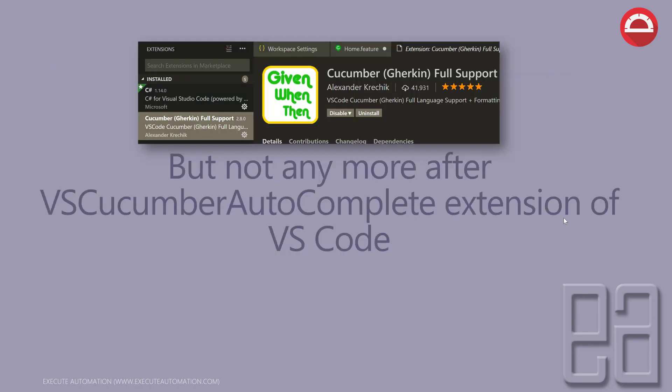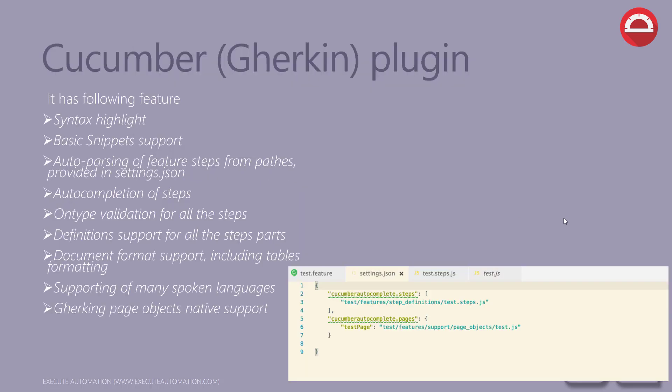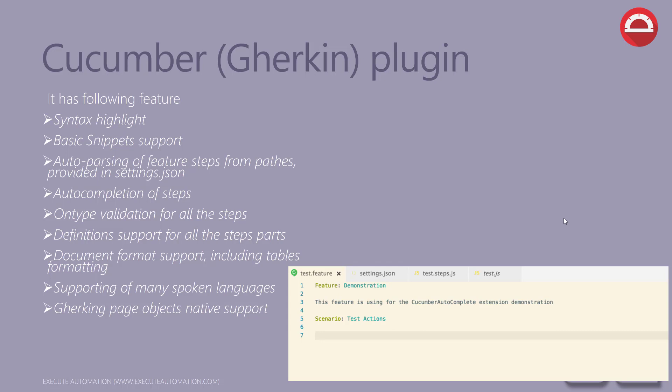But not anymore — after the Visual Studio Cucumber Autocomplete extension for VS Code. This is really cool; as you can see there are totally 41,931 downloads. It will likely grow even more because it is a really helpful tool. The Cucumber Gherkin plugin has the following features.